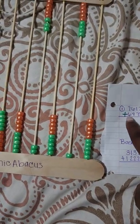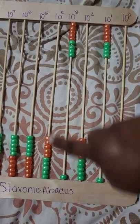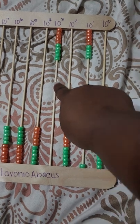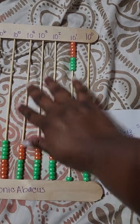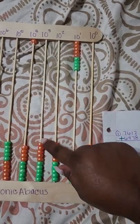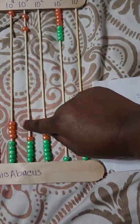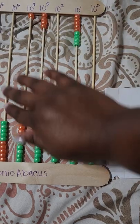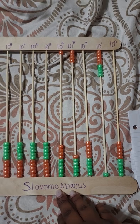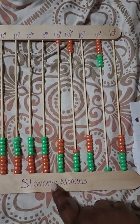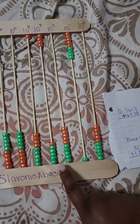Now we need to add six in our thousands: one, two — we notice that we have ten up here, so we're going to push all of these down and regroup into our ten-thousands — three, four, five, and six. Now we have our answer, which is fourteen thousand and ninety.